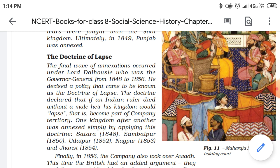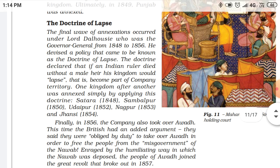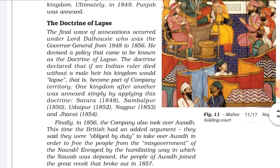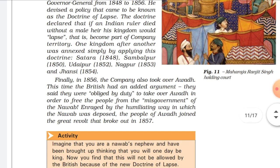Now let me tell you the list of states annexed by this policy. First comes Satara in 1848, then Sambalpur in 1850, Udaypur in 1852, Nagpur in 1853, Jhansi in 1854, and Awadh in 1856.